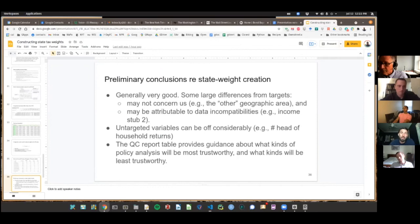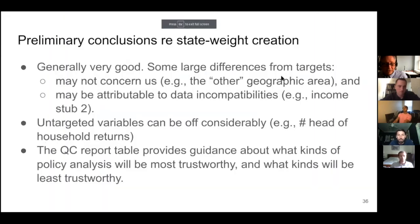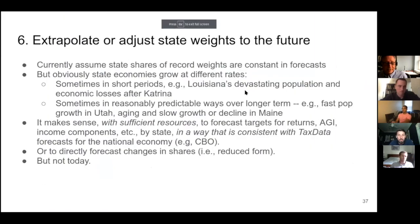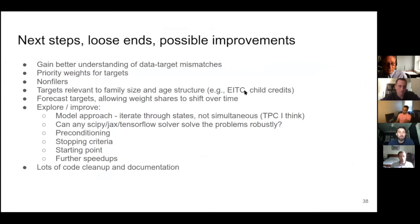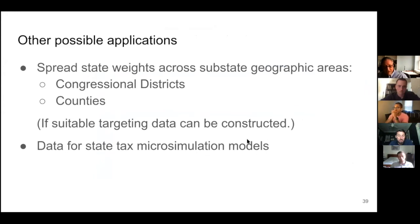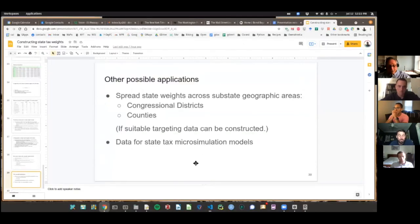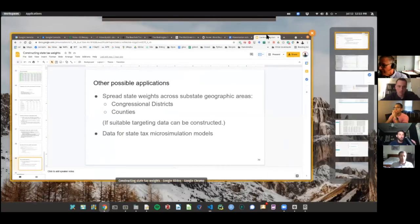The obvious applications aside from this are to spread state weights across substate geographic areas such as congressional districts and counties, if there are suitable targeting data. And there are data for state tax microsimulation — you could construct data for state tax microsimulation models. There are all sorts of things that could be done to make this better, but I don't think we have time. So with that, questions?